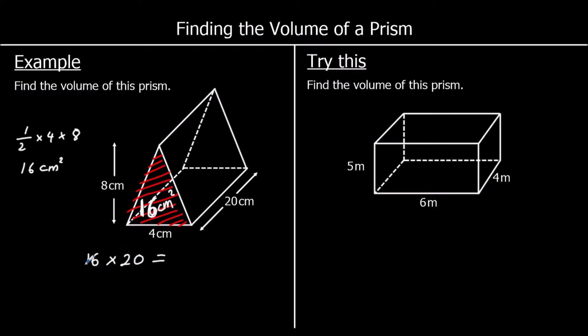So to find the volume we're doing 16 times 20. 16 times 2 is 32, and add the zero on the end, so 320. Volume is measured in cubes, so it's 320 centimeters cubed.